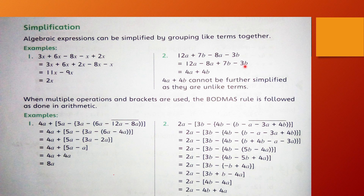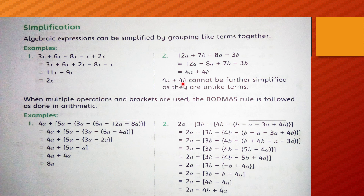12a mein se 8a minus karein to 4a aayega. Plus 7b mein se 3b minus karein to plus 4b aayega. The final answer is 4a + 4b. 4a + 4b cannot be further simplified as they are unlike terms — idhar 4 ke saath 'a' hai aur idhar 4 ke saath 'b' hai.